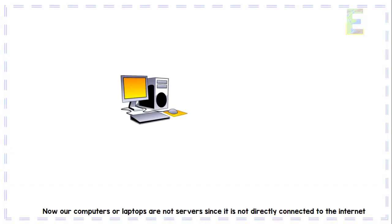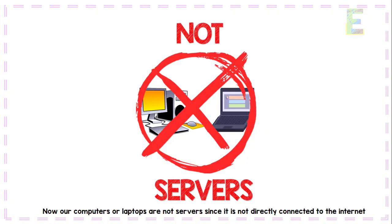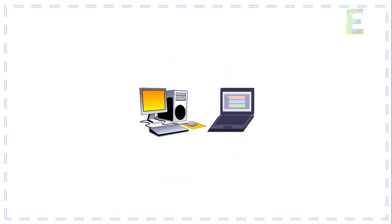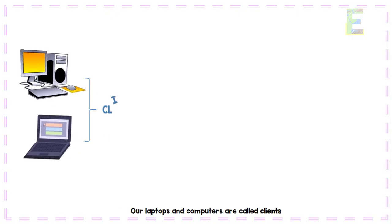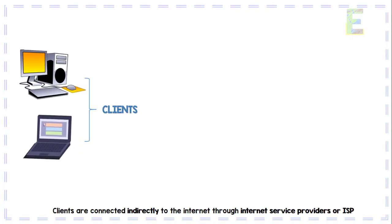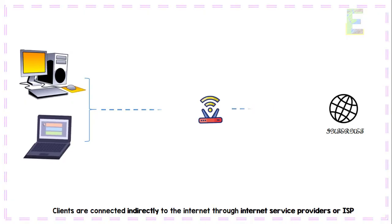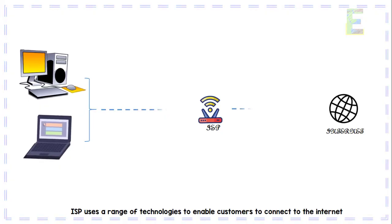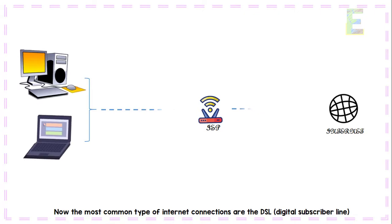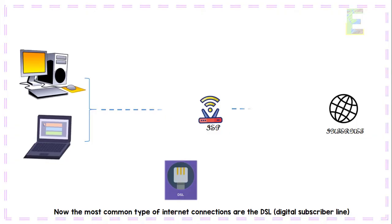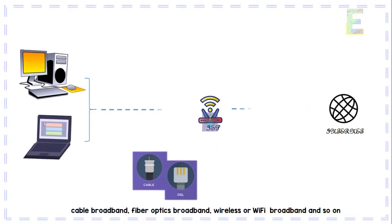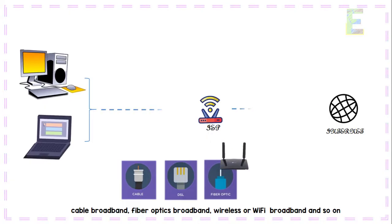Now, our computers or laptops are not servers since they are not directly connected to the Internet. Our laptops and computers are called clients. Clients are connected indirectly to the Internet through Internet Service Providers, or ISPs. ISPs use a range of technologies to enable customers to connect to the Internet. The most common types of Internet connections are DSL or Digital Subscriber Line, cable broadband, fiber optics broadband, wireless or Wi-Fi broadband, and so on.